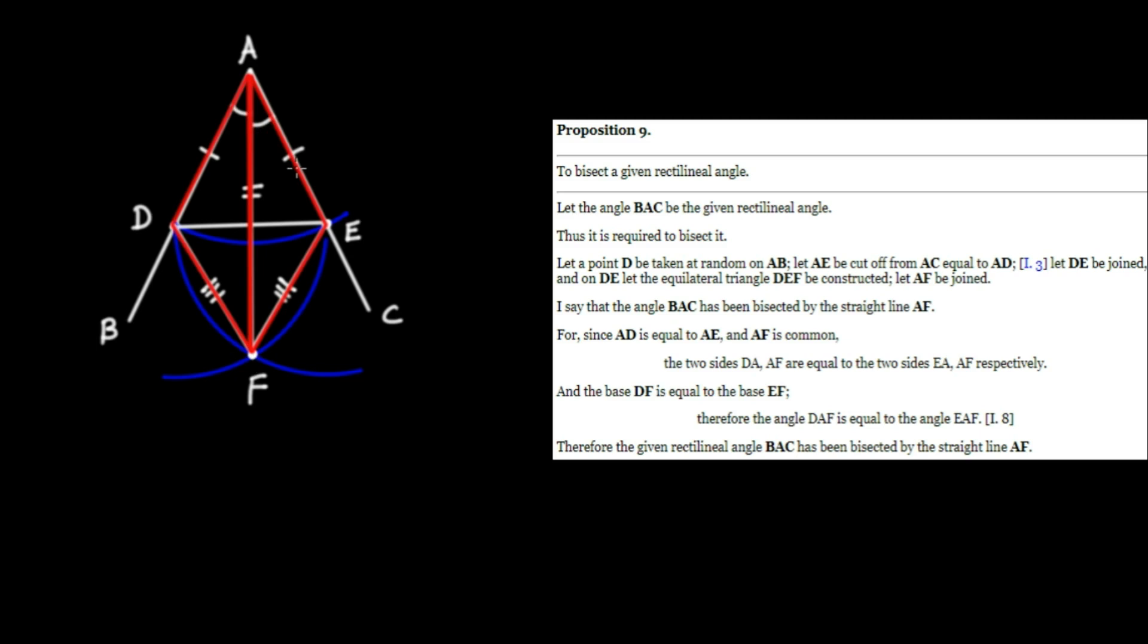And that's what it means to bisect the angle. So therefore, the angle BAC has been bisected. And Euclid concludes, therefore, the given rectilineal angle BAC has been bisected by the straight line AF. And that's all.